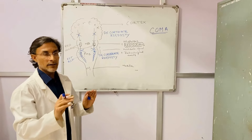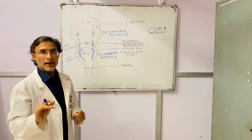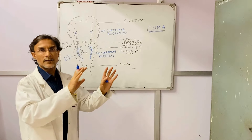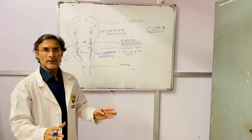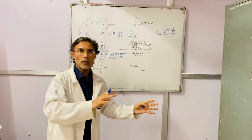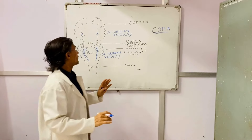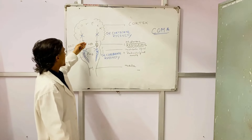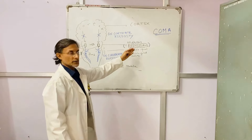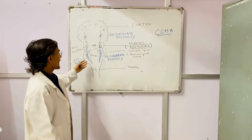Before that, we have to understand the important structures responsible for this clinical phenomenology. In a normal alert patient, the cortex is the predominant area controlling subcortical structures. In a comatose patient, three key structures matter: the cortex, the red nucleus in the midline — which classifies decorticate versus decerebrate rigidity — and the vestibulospinal and reticulospinal tracts in the pons and medulla.